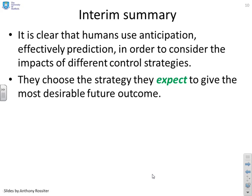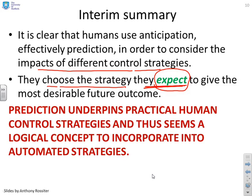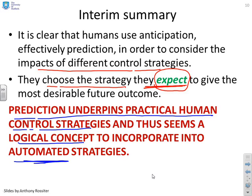It's clear that humans use anticipation, or prediction, in order to consider the impacts of different control strategies. We choose the strategy that we expect — and that's an important word, expect, not guarantee — to give the most desirable future outcome. Therefore, prediction underpins practical human control strategies, and it seems a logical concept to incorporate into any automated strategy.